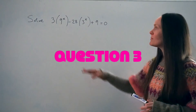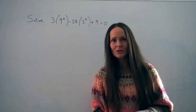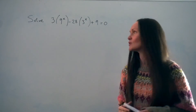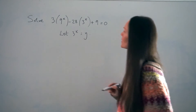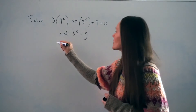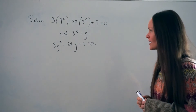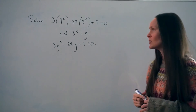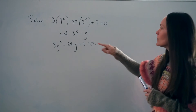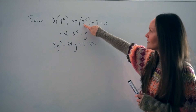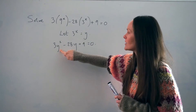In the next question, we have to solve 3 multiplied by 9 to the power of x, minus 28 multiplied by 3 to the power of x, plus 9 equals 0. I'm going to make a substitution to try and rewrite the question as a quadratic equation that's easier to solve. The substitution I'm going to make is that 3 to the power of x will be replaced with the letter y. With this substitution, the equation can be written as 3y squared minus 28y plus 9 equals 0. Now let me explain how I got there, as it's not always obvious. This part — 3 to the power of x — simply changes to y. But 9 to the power of x has changed to y squared.